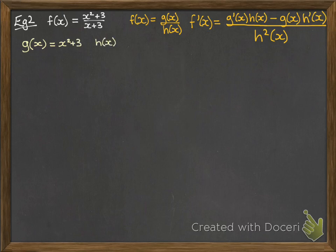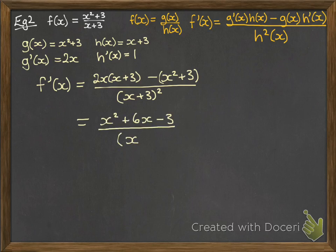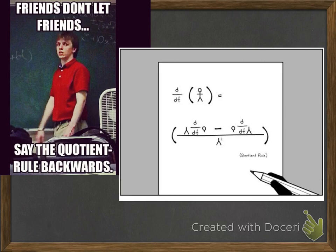Alright, so g(x) is the top, h(x) is the bottom. Differentiate both of those. And then put them together. So we are going to do g'(x) times h(x) subtract g(x) times h'(x) and divide it by h²(x). And then see if we can simplify that down a little. And that is as far as that one went.